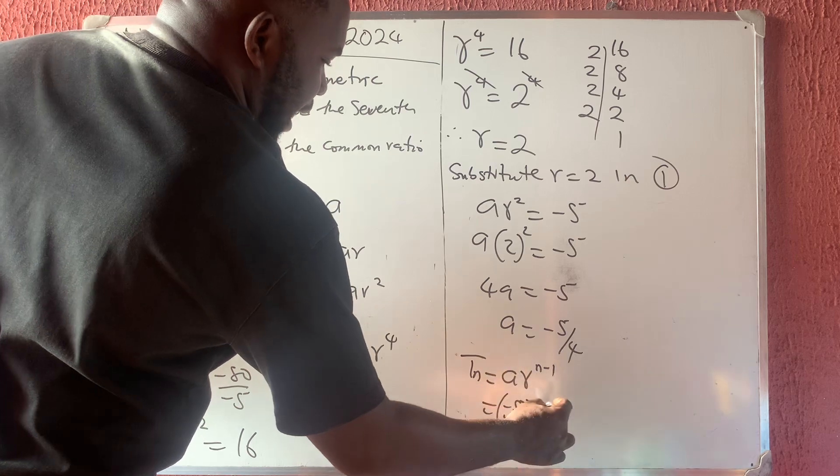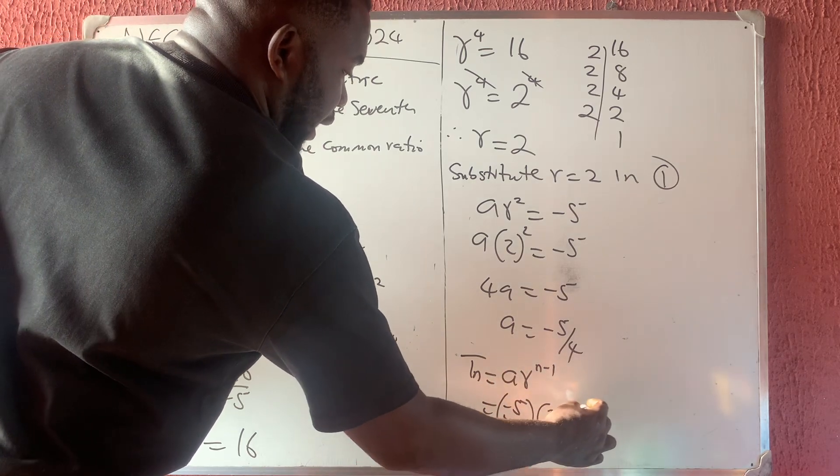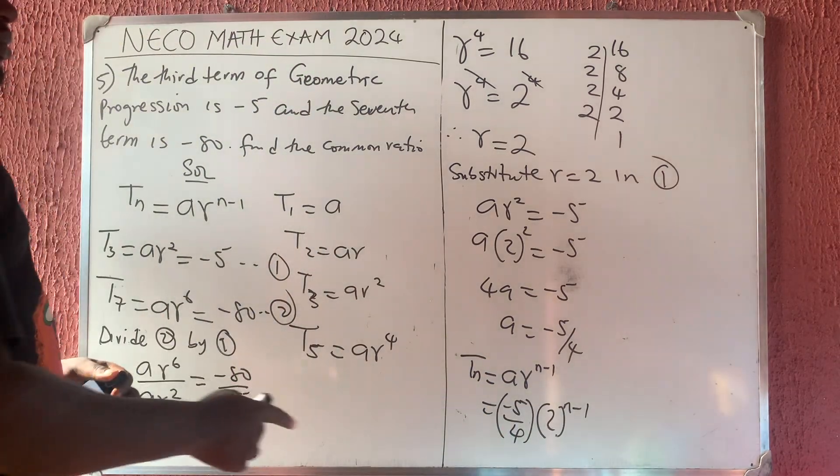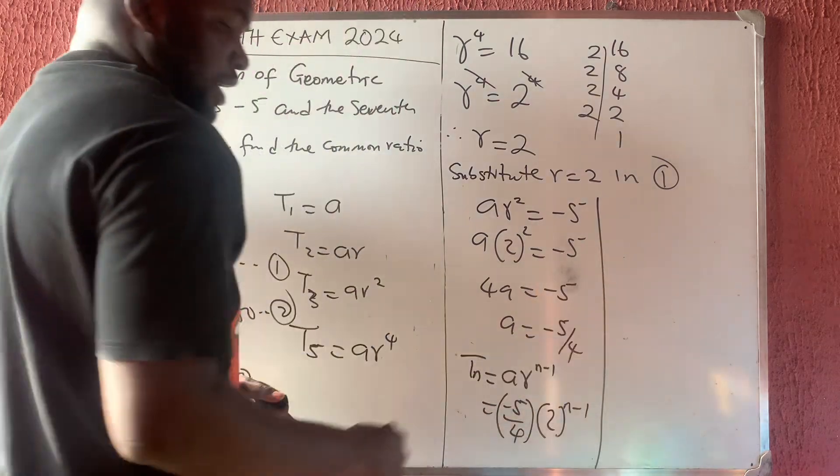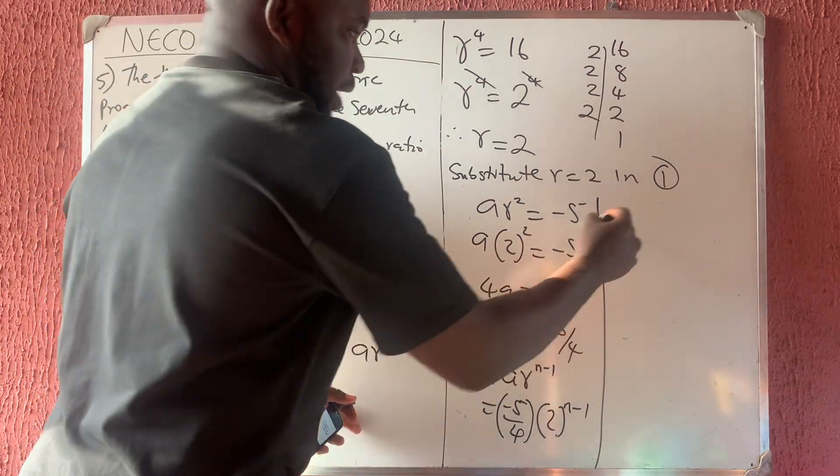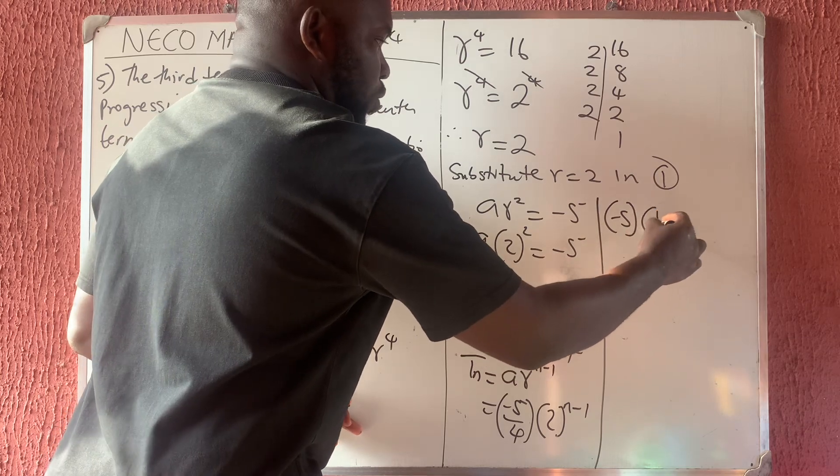Then, I'm having my R to be 2 raised to the power of N minus 1. This can further be broken down as... I'm still showing you some things they can ask you. This can still be broken down as minus 5 in bracket of 1 over 4.